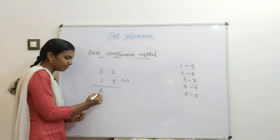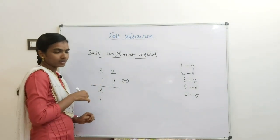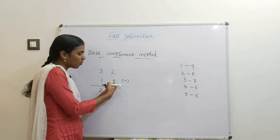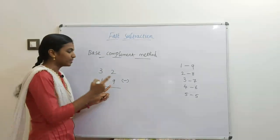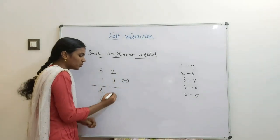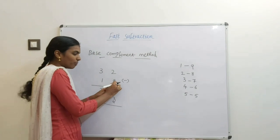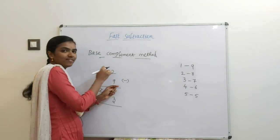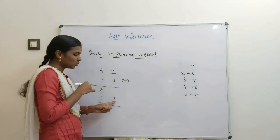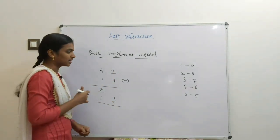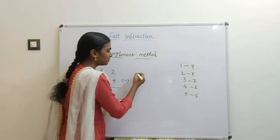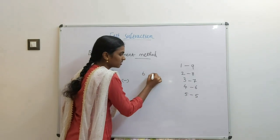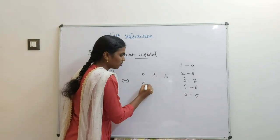The left side digit is 2, so 2 minus 1 gives 1. Now apply the complement: the complement of 9 is 1, and 1 plus 2 is 3. So the answer is 13.